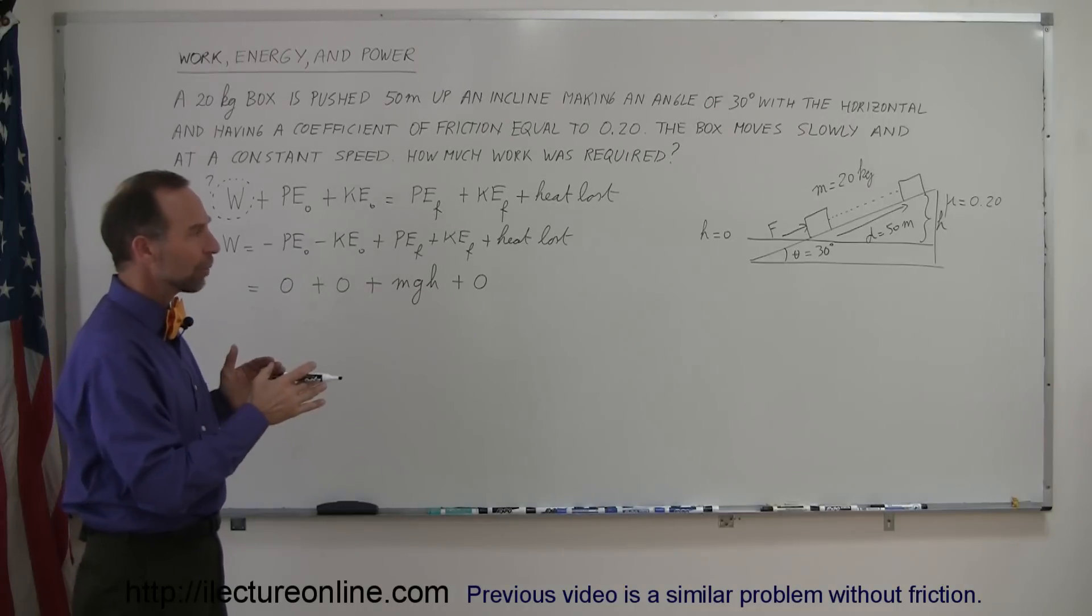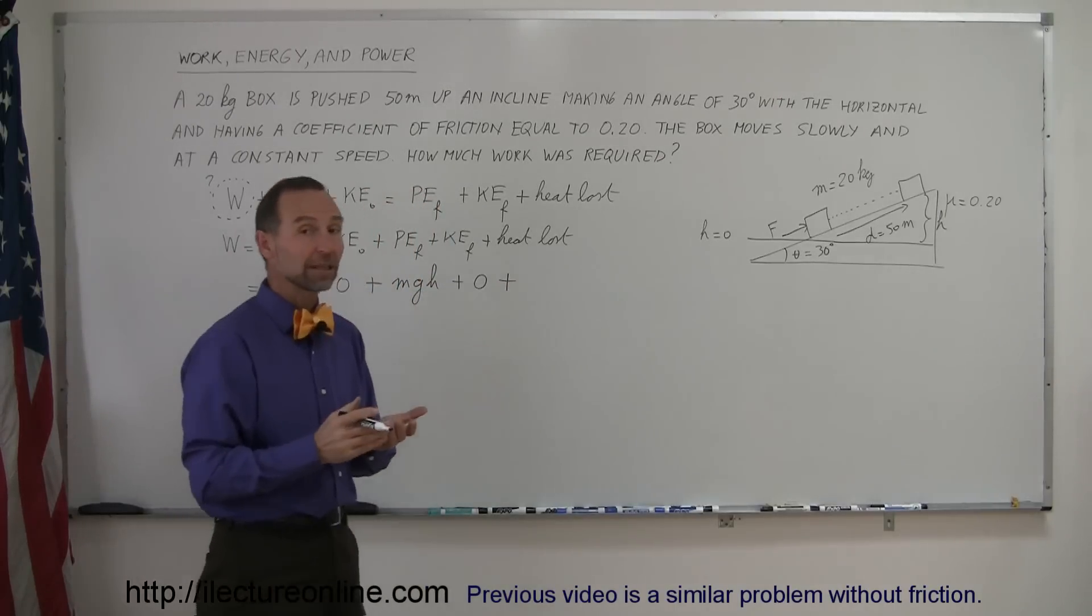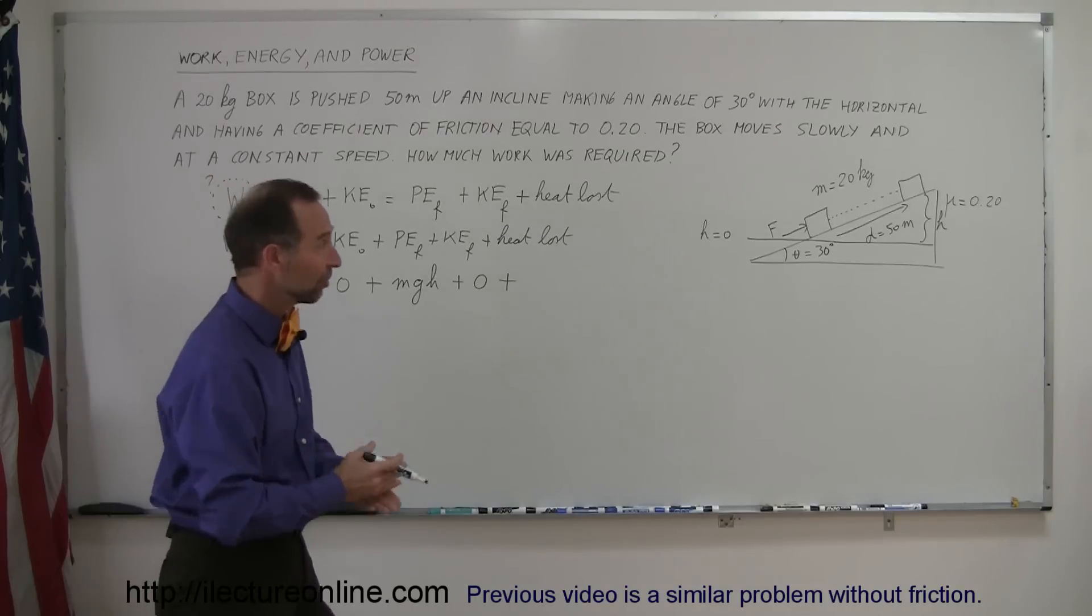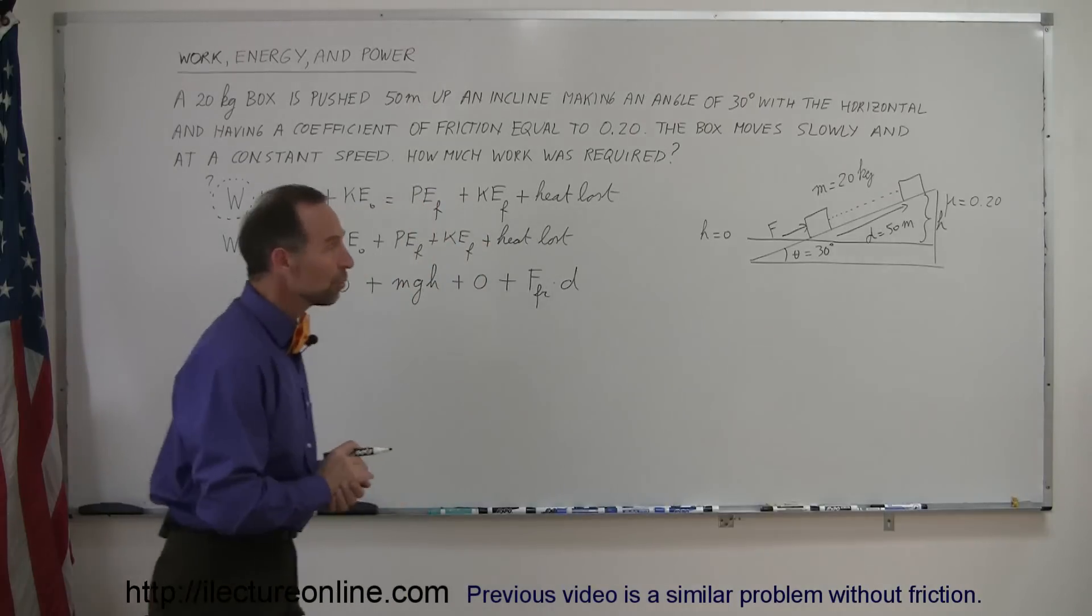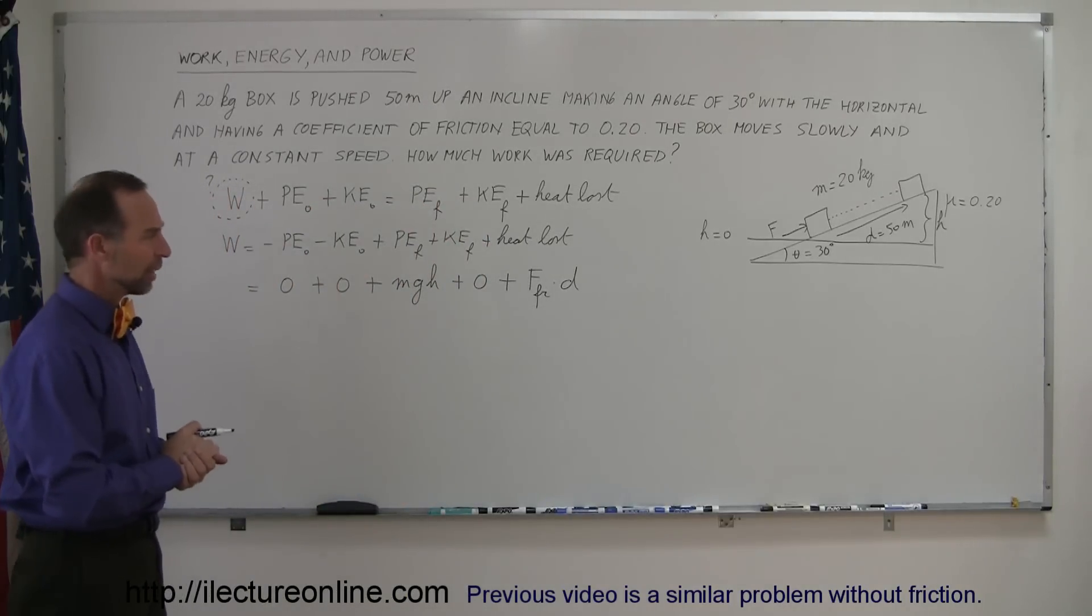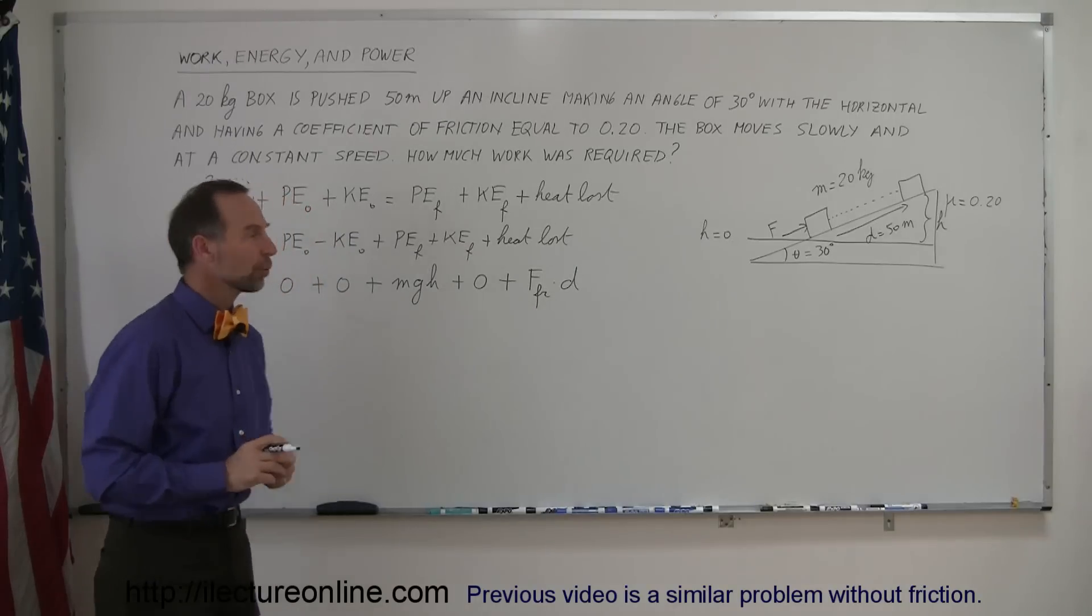Well, we lost some heat because we had to overcome some friction, and so therefore, the heat loss would be the work done to overcome the friction, and the definition of work done is force times distance, so we can say that's equal to the friction force times the distance over which the box was moved. So now we have to find out what the friction force was equal to.